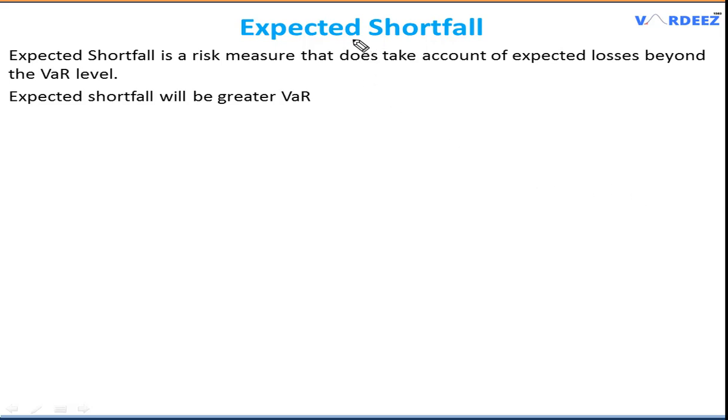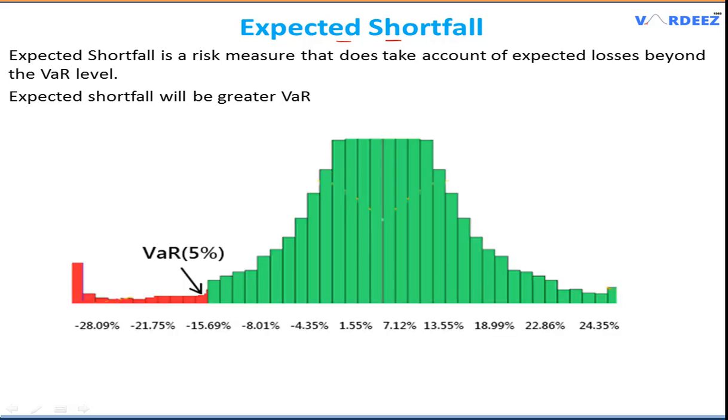Welcome back. In this video we're talking about expected shortfall. In the last video I talked about VAR and the various approaches to calculate value at risk, but we realized that VAR has a major limitation - it doesn't tell us about the magnitude of losses beyond the VAR level. If my VAR is exceeded, how bad can my losses be? That's something VAR doesn't tell me, and that's why we need another risk measure.